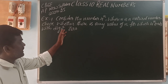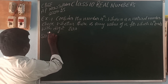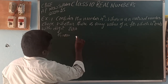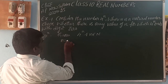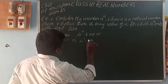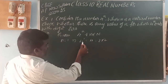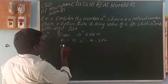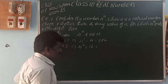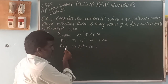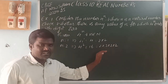Here the question asks us to check whether 4^N ends with a digit 0 for any natural number N. When N=1, 4^1 = 4. You can write 4 as 2 into 2 by prime factorization — the number ends with digit 4. When N=2, 4^2 = 4 into 4 = 16, which ends with digit 6. Its prime factorization is 2 into 2 into 2 into 2. It is a multiple of 2 and its prime factorization contains only 2.